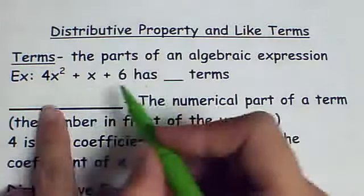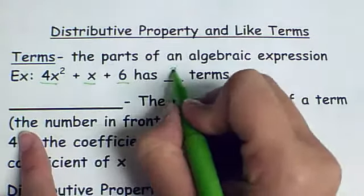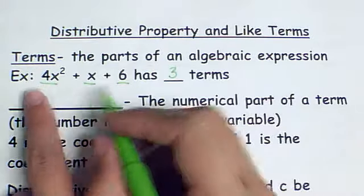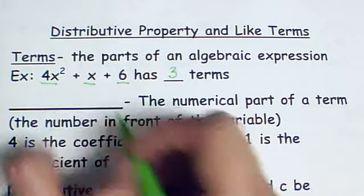So in this example we have one, two, three terms. There are three because there are one, two, three things being separated by a plus or a minus sign.